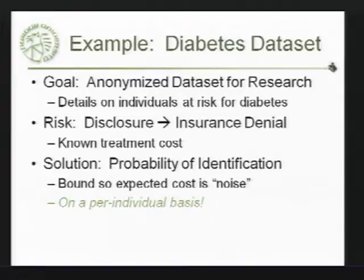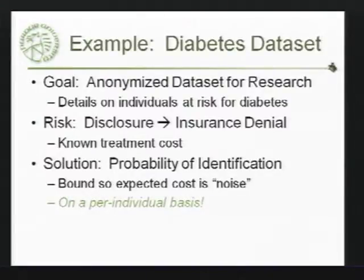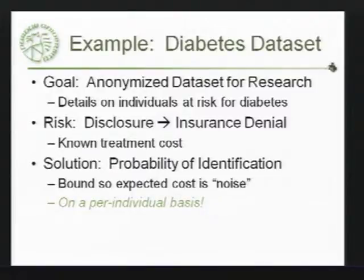And we want to do this on a per-individual basis. Different individuals — the insurance company may already know things that put them at a different risk for diabetes or a different expected cost. Or different individuals may need different levels of anonymization. For me, the year of birth and my zip code may be enough that they can identify me with a 10% probability. Whereas for a Purdue student, year of birth — well, there's a lot of people born in the same year, most of the people in their class — and so the estimate may drop way down. You could say for those people we can use month and year.